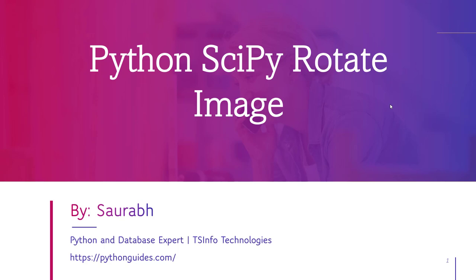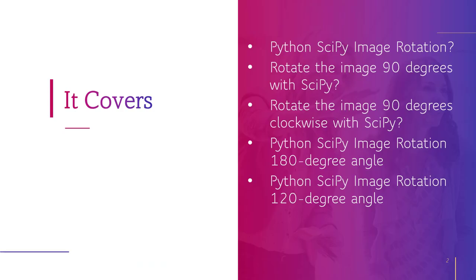Let's see what we are going to cover in this video. First, we will know about Python SciPy image rotation. After this, we will know how to rotate the image at 90 degree angle with SciPy. Then we will understand how to rotate the image at 90 degree angle in a clockwise direction with SciPy, and we will also learn about Python SciPy image rotation at a 180 degree angle. At the end, we will know about Python SciPy image rotation at a 120 degree angle.